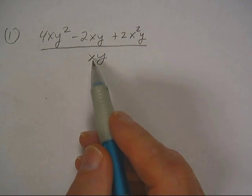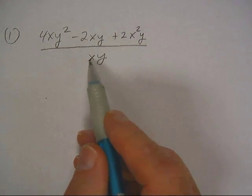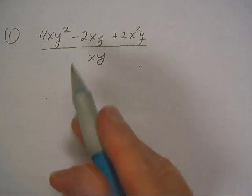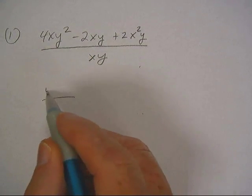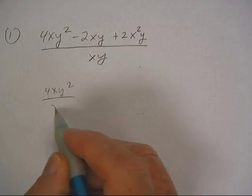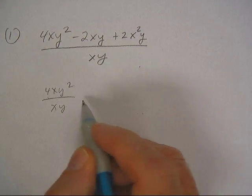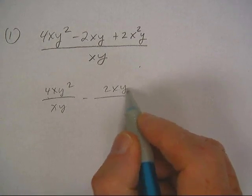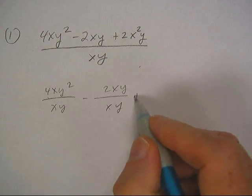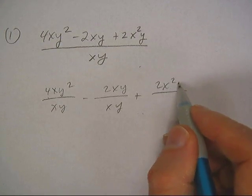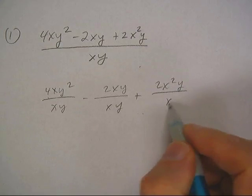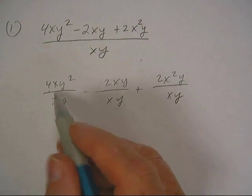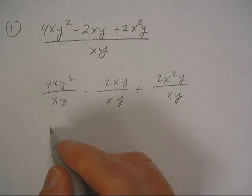We get this division problem and look, the divisor is xy. Say it out loud: giant fraction. Say it again: giant fraction. And then just write them all separate.